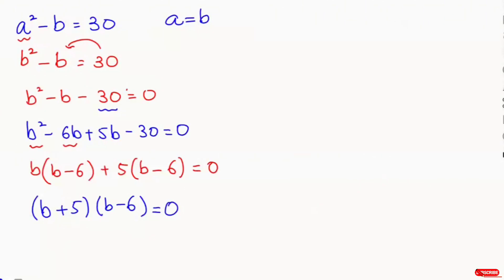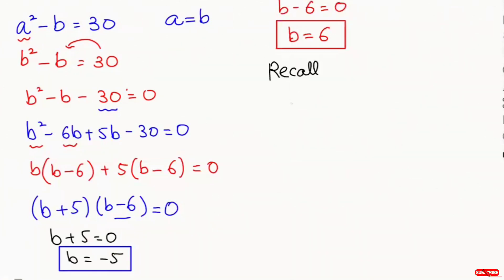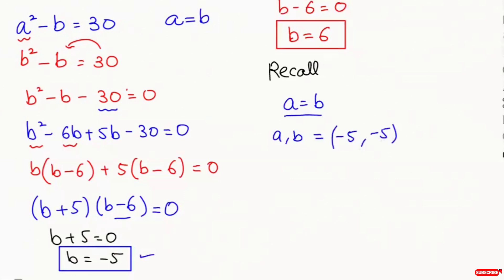Rearranging gives (b + 5)(b - 6) equals 0. So we get two cases: b plus 5 equals 0, giving b equals negative 5; and b minus 6 equals 0, giving b equals 6. Since a equals b, we have the solutions: a equals negative 5 and b equals negative 5, or a equals 6 and b equals 6.